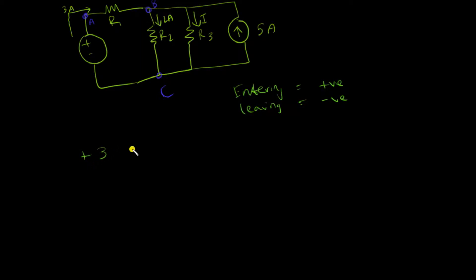I is leaving node B so minus I, and five amps is clearly entering node B so I write plus five.